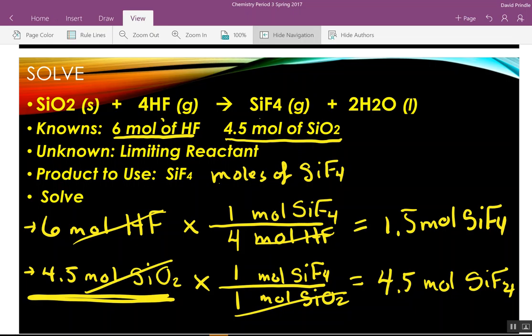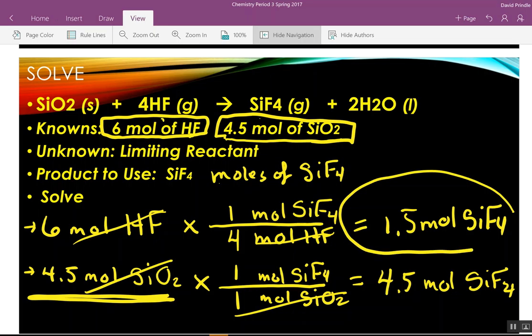So, which of these guys up here are going to limit how much silicon tetrafluoride I'm going to make? HF. HF. Because it made the least amount of SiF4. Don't always assume the larger amount of material will make the most material product. All right?